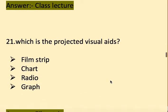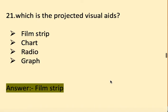Next question: Which of the following is a projected visual aid? Options: film strip, chart, radio, and graph. The right answer is film strip — film strip is a projected visual aid.